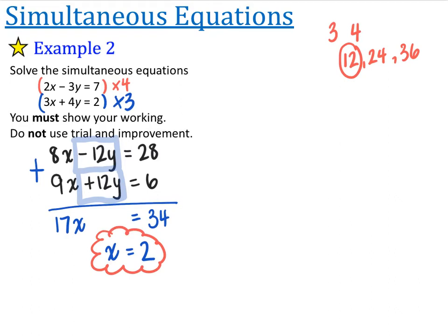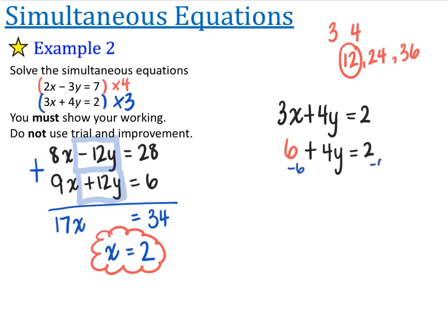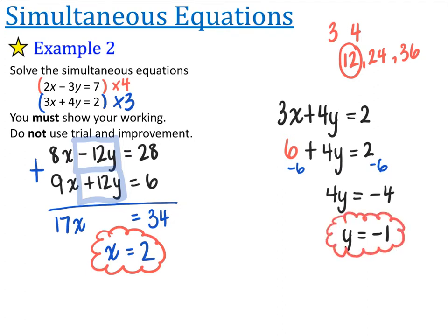Now we're going to choose whichever equation we like. This time I like the second equation better — I don't really like negatives, so I'm going to use 3x plus 4y is equal to 2. We just found out that x is equal to 2, so that's 3 times by 2, which is 6. So 6 plus 4y is equal to 2. I subtract 6 from both sides and I'm left with 4y is equal to negative 4. Dividing both sides by 4, y is equal to minus 1. So the solution is x is equal to 2 and y is equal to minus 1.